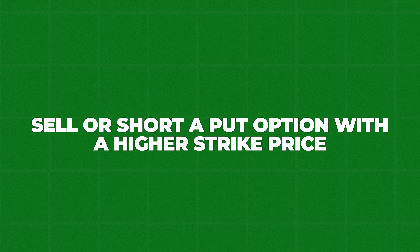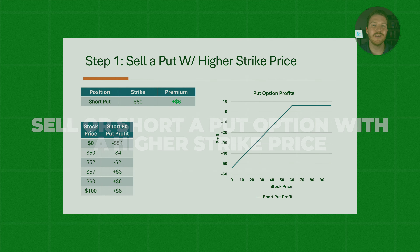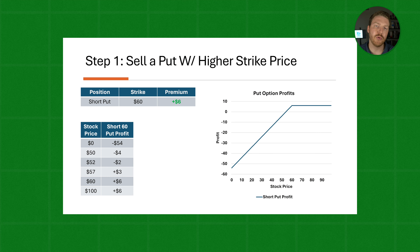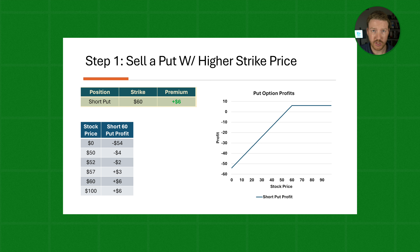The first step in executing a bull put spread is to sell or short a put option with a higher strike price. This is exactly the same as the example we looked at a few minutes ago. We're going to assume we're selling a put option with a strike price of $60, and we receive a $6 premium for doing so. Our profit profile for that position is shown in the graph on the right.